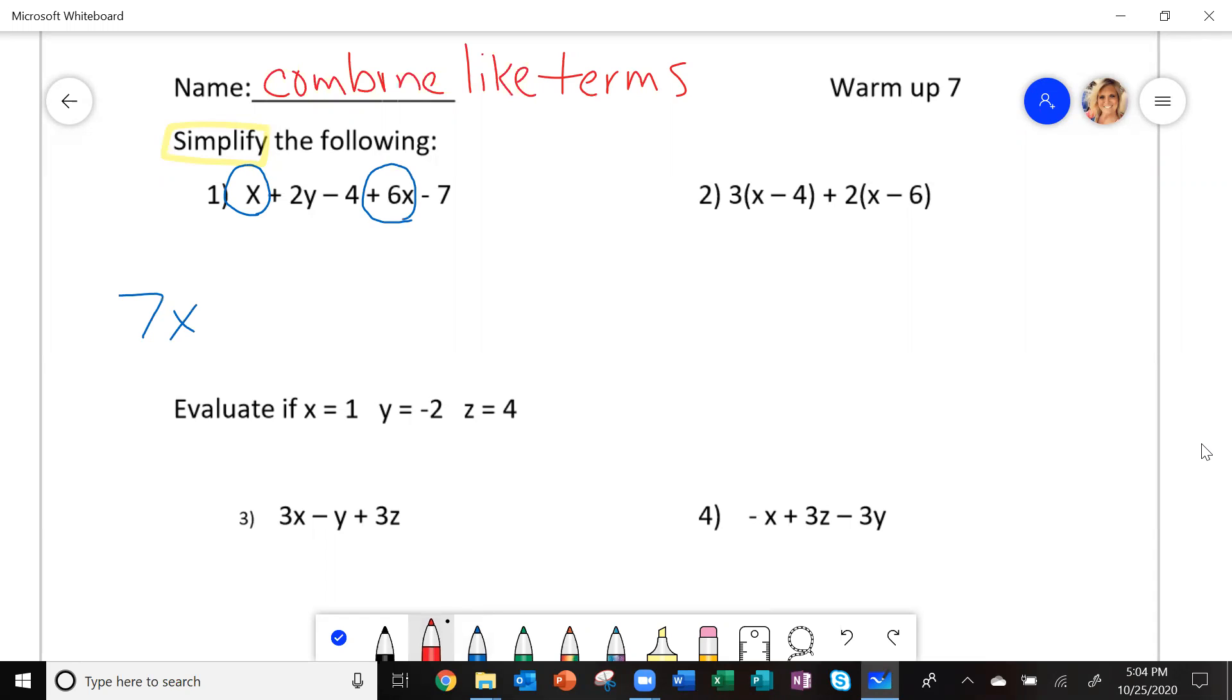So let's look here. I've got 2y. Do I have any other y's? Nope. So I'll just write plus 2y. And then I have negative 4 minus 7. That gives you negative 11. This is your simplified answer. This is as far as it can go.